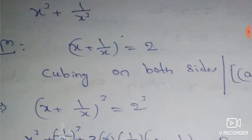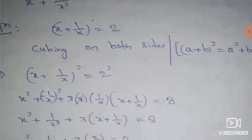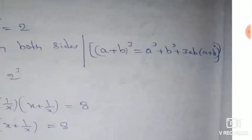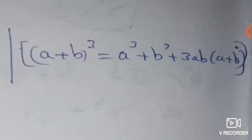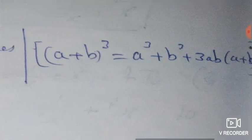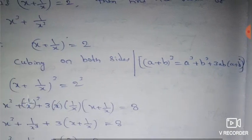x + 1/x is equal to 2. Cubing on both sides. You know the cube formula: a + b whole cube is equal to a³ + b³ + 3ab(a + b). Remember this formula — you need to know these identities.